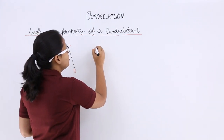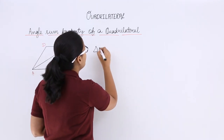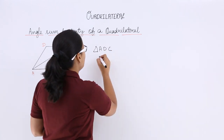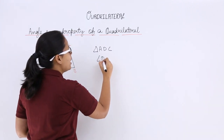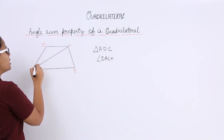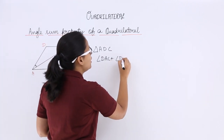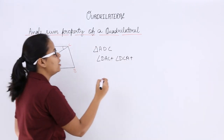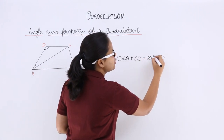So let's suppose to prove the angle sum property for a quadrilateral, consider triangle ADC. What will be the sum of the angles of this triangle? The angles are: angle DAC, plus angle DCA, plus angle D — the whole angle D — is equal to 180 degrees. Let's suppose this is equation 1.